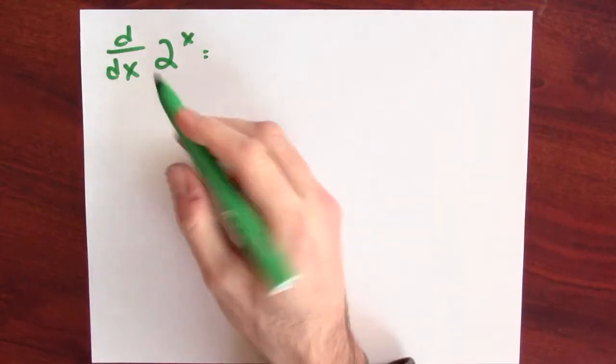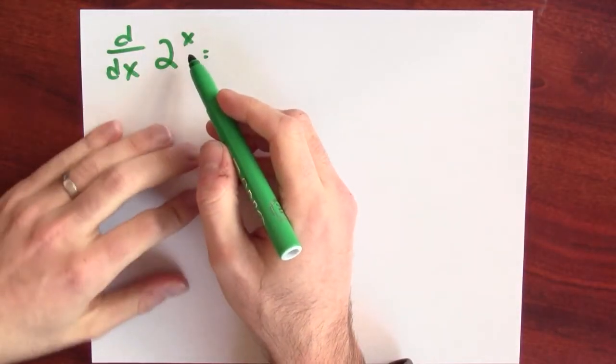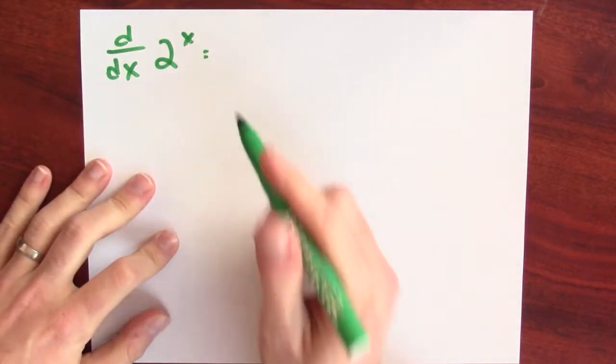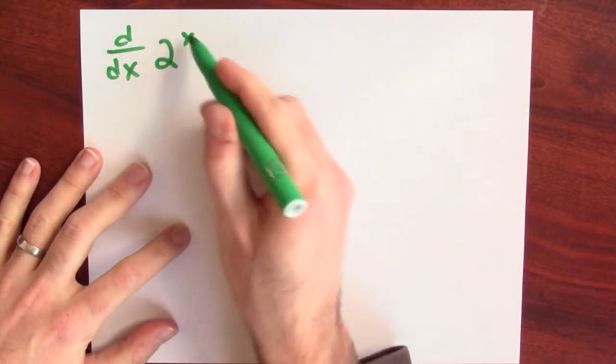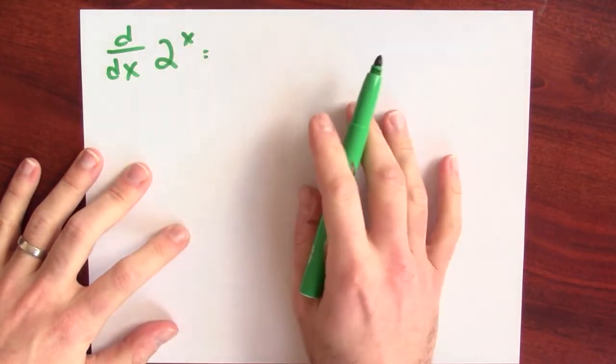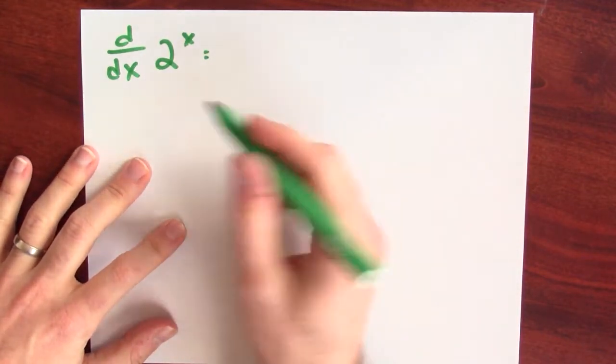E to the x is a sort of key that unlocks how to understand the derivative of a ton of other exponential functions. For example, now that we know how to differentiate e to the x, we can also differentiate 2 to the x. So let's suppose I want to differentiate 2 to the x. Now, you might just memorize some formula for differentiating this, but it's easier, I think better, to just recreate this function out of the functions that you already know all the derivatives of.